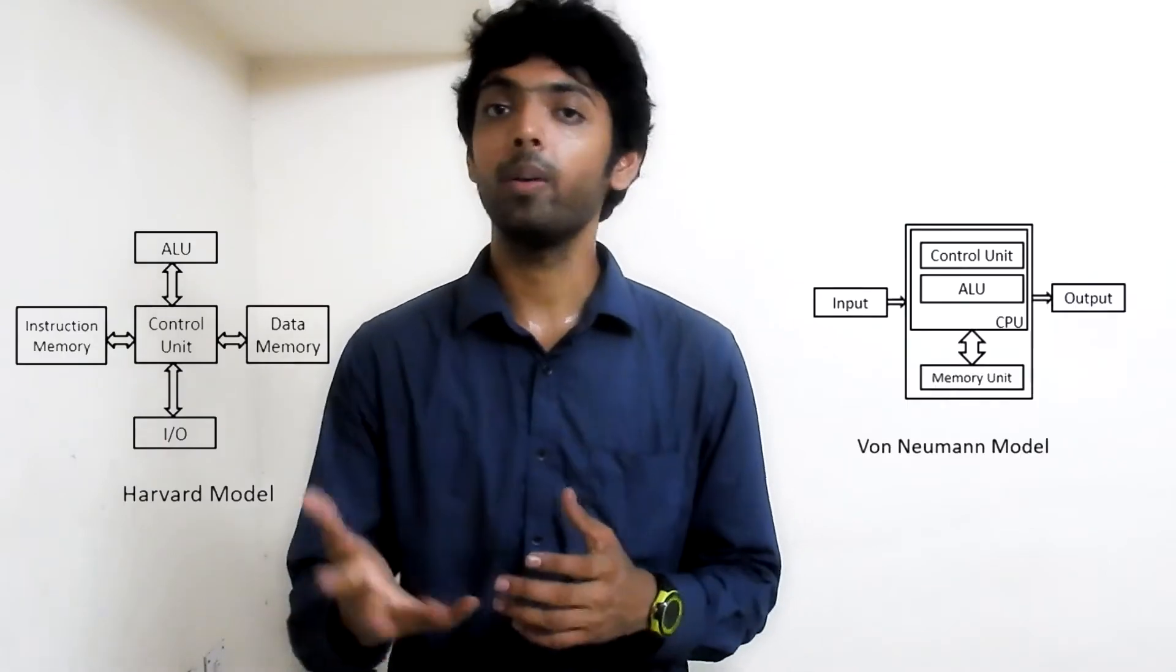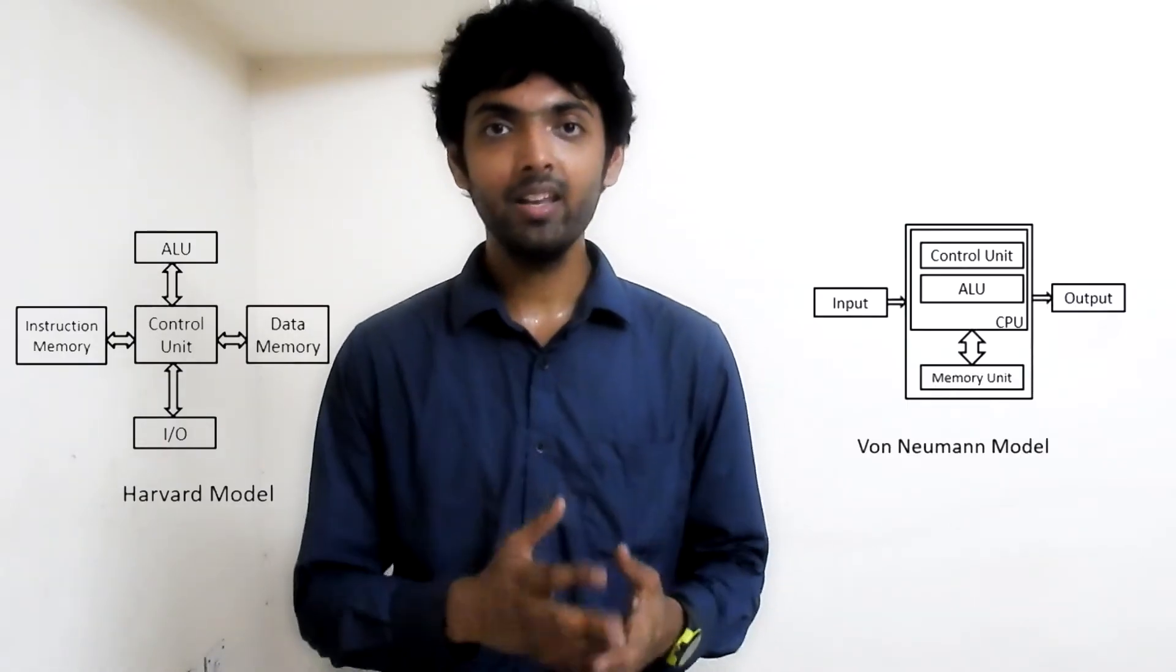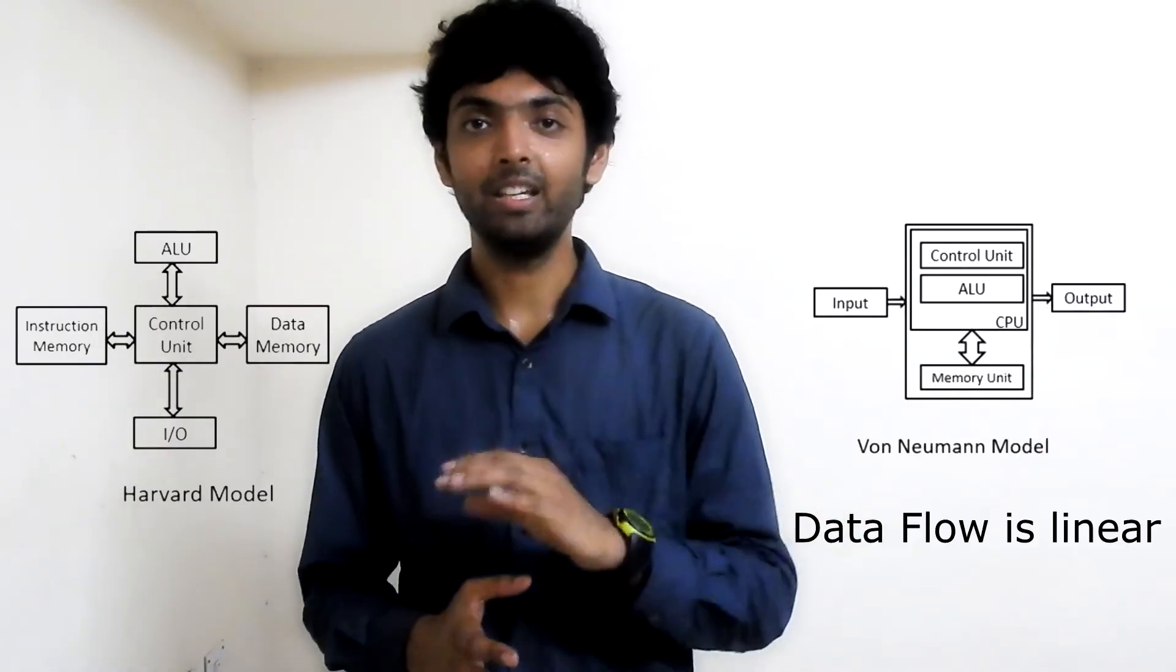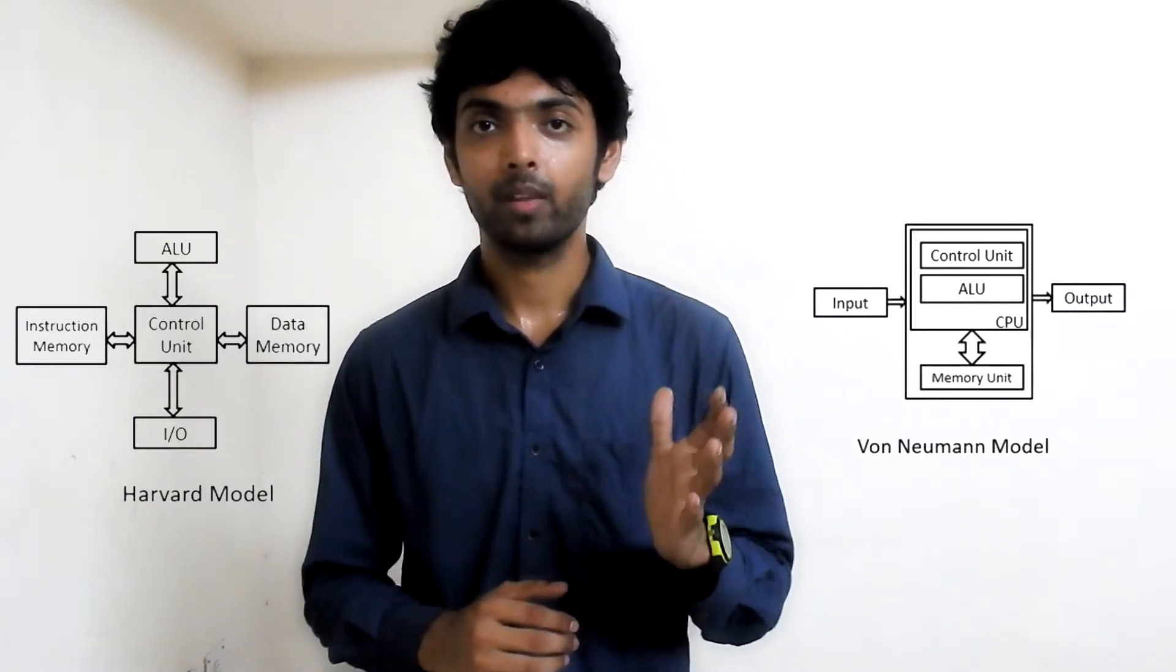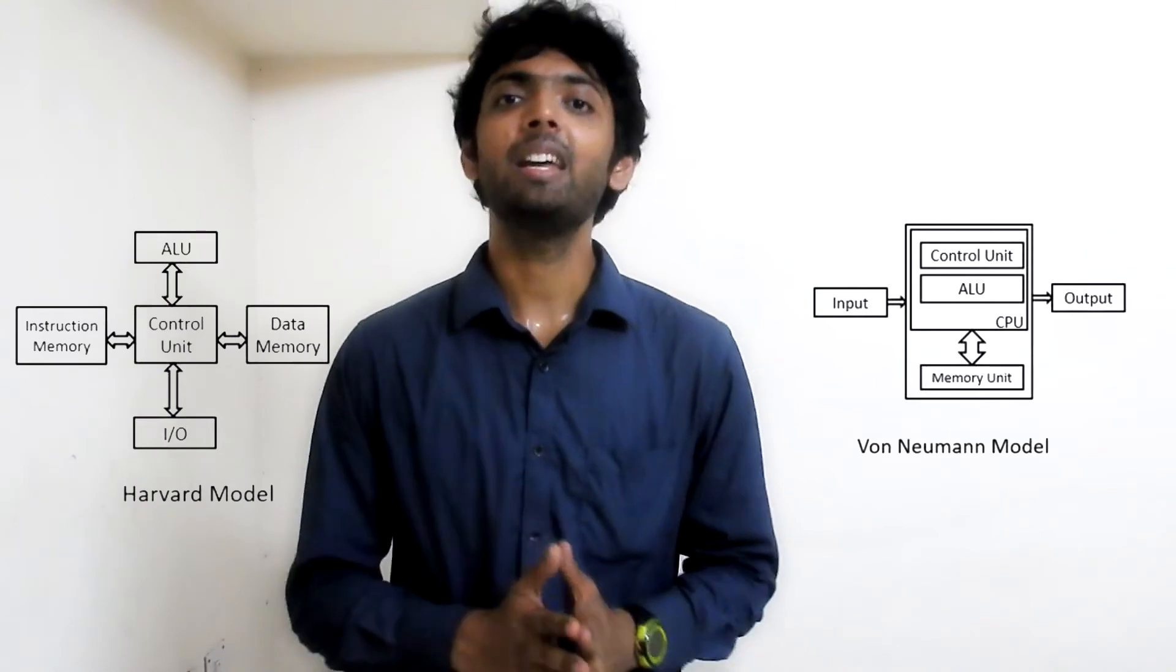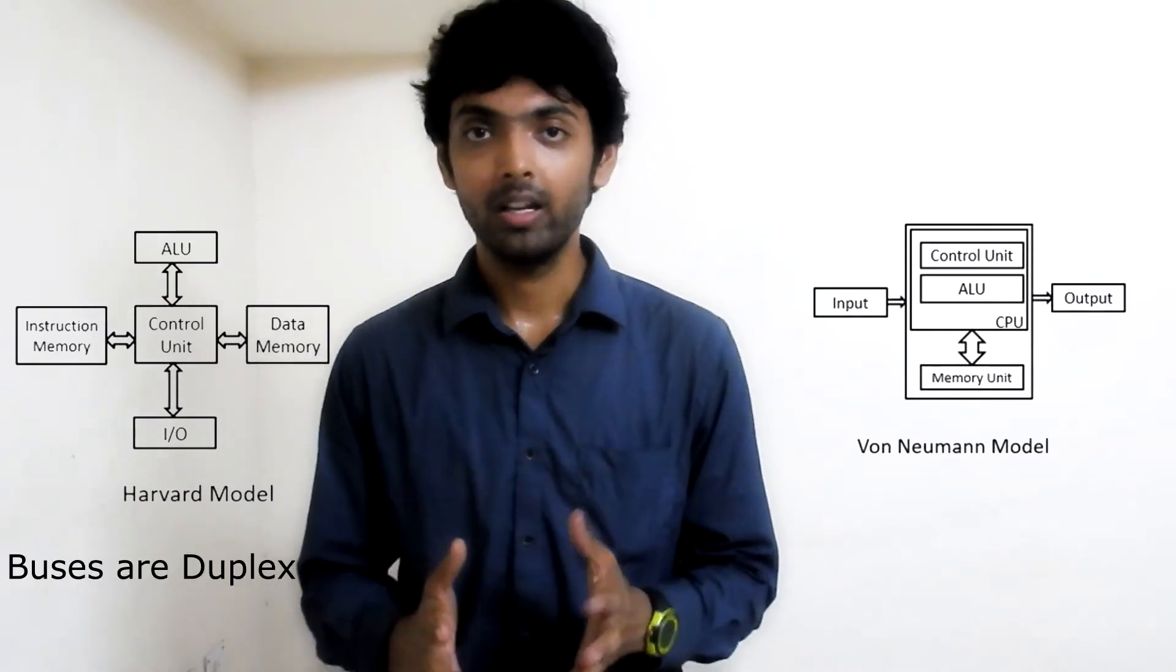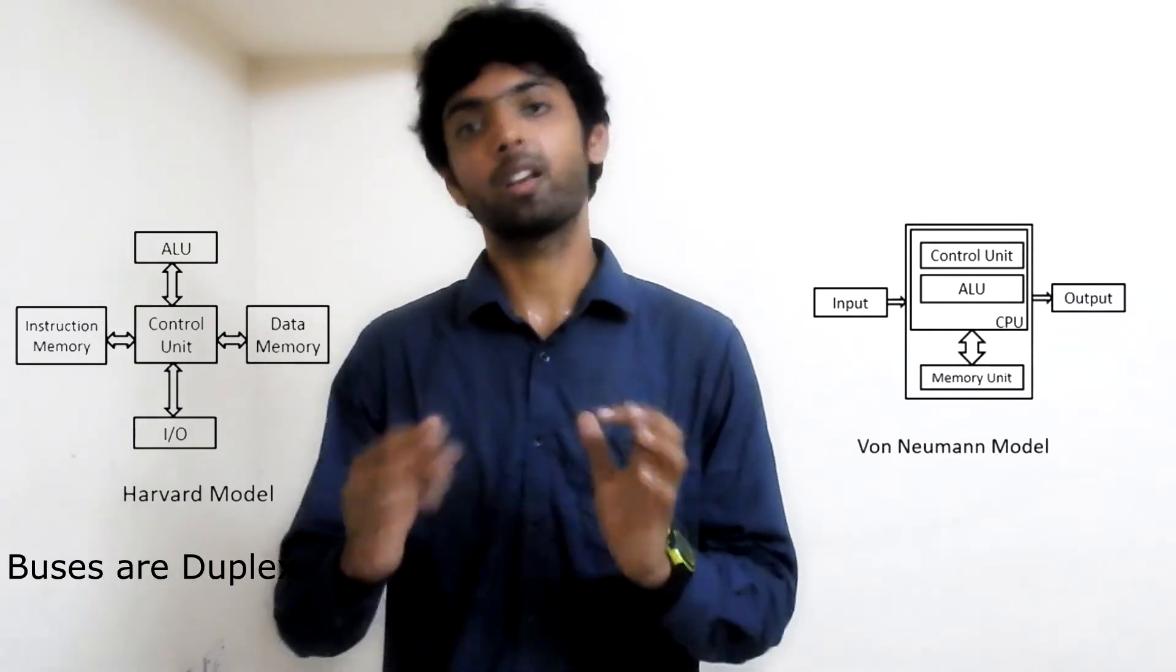Now talking about the difference between Von Neumann architecture and Harvard architecture: we can see that the data flow in Von Neumann architecture is linear, meaning the data can either be fetched or it can be coded. In Harvard architecture, all of the buses are duplex in nature, meaning data can be transmitted and received back.